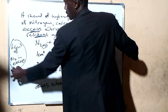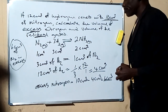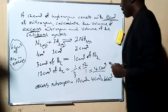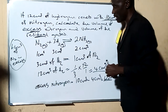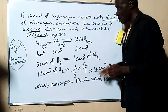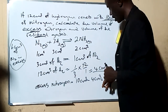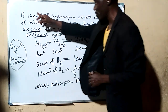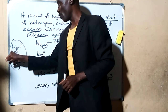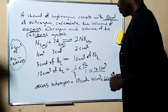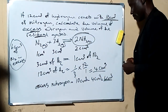That means we have the volume of residual gases. At the end of the reaction, the gas that remains — the excess nitrogen — is 6 cm³. The 12 cm³ of hydrogen will be completely consumed. The residual gases will be 6 cm³ of nitrogen plus whatever ammonia is produced.